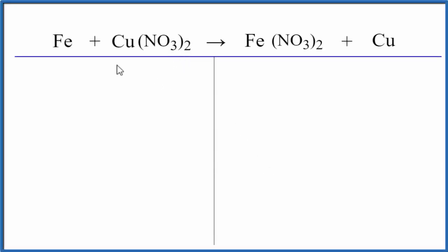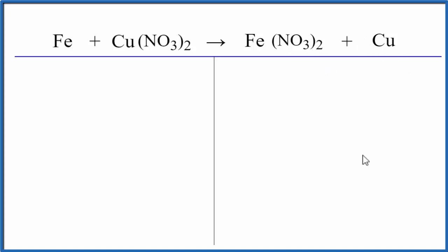When we balance chemical equations, we add up all the atoms on each side and compare to make sure they're the same. If they aren't, we change the coefficients — the numbers in front of each of the elements or compounds. In this case, they're already the same, so this equation is already balanced.